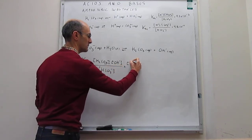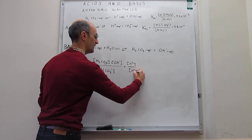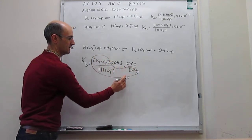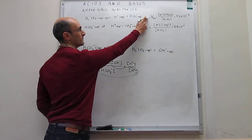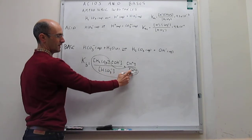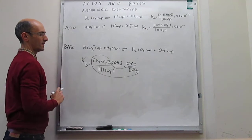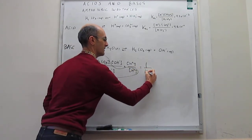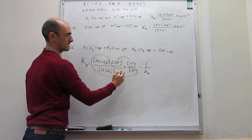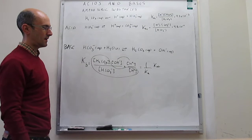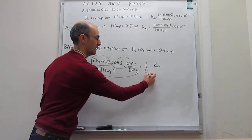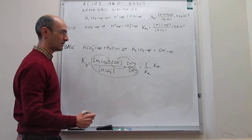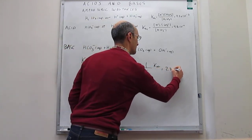We don't have Kb directly, but if we multiply by the concentration of protons in both the numerator and denominator, we get something meaningful. Notice that in the denominator we have bicarbonate multiplied by protons — which is the numerator of Ka1 — and carbonic acid in the denominator. So that piece of Kb is 1/Ka1, and the remaining piece involving hydroxide and protons is just the autoionization constant for water, Kw. Therefore, Kb = Kw / Ka1 = (1×10⁻¹⁴) / (4.3×10⁻⁷) ≈ 2.3×10⁻⁸.